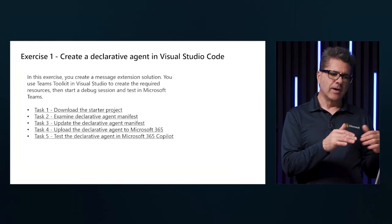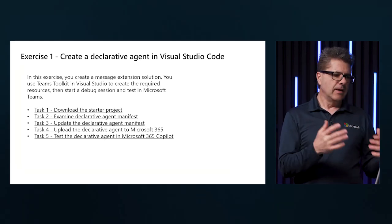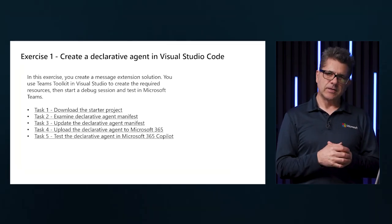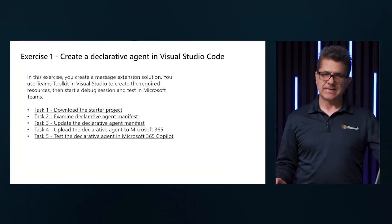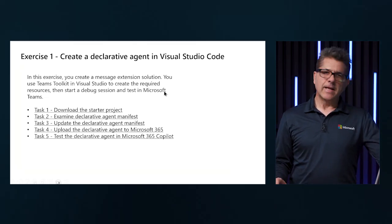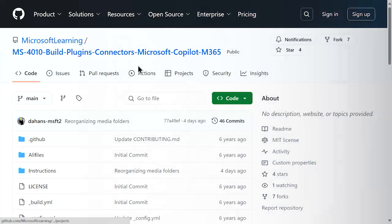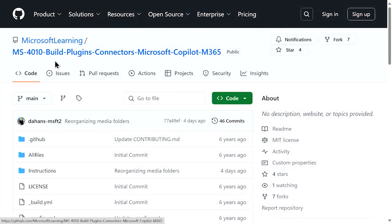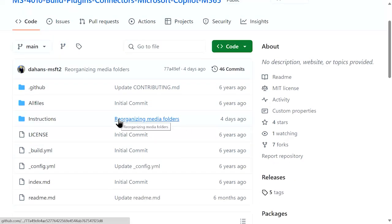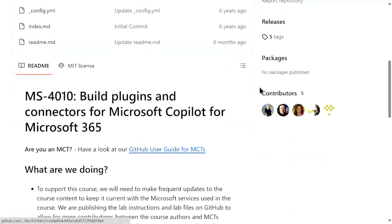We are going to do an update on the manifest if needed, upload the declarative agent to Microsoft 365, and then test it. Let's go ahead and get started. First, let's go to GitHub. Here in GitHub, you can search for ms-4010 and you will find the build plugin connectors. This is our lab package that we are going to use.